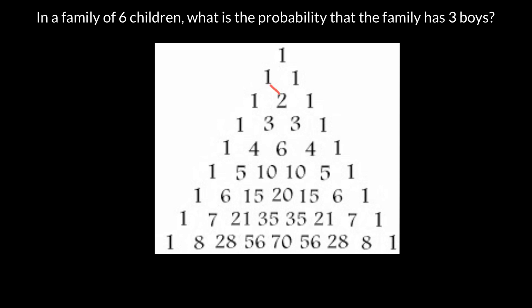For example, this two we got by adding one and one. This three we got by adding one and two, and this three also. This four we got by adding one and three. The six we got by adding three and three. And this four we got by adding three and one. So it is very easy to fill this Pascal's Triangle — we just add numbers in the previous row to make numbers in the following row.